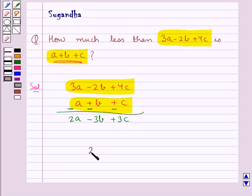So 2a minus 3b plus 3c is our final answer. This completes the session. Hope you have understood the solution of this question.